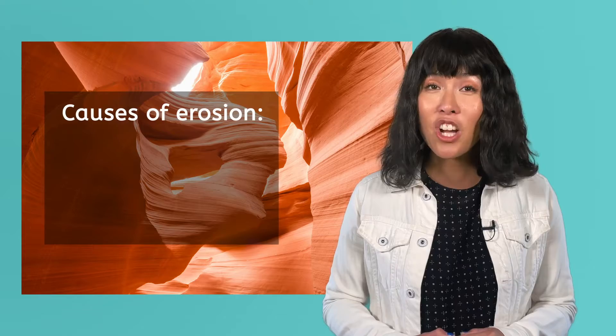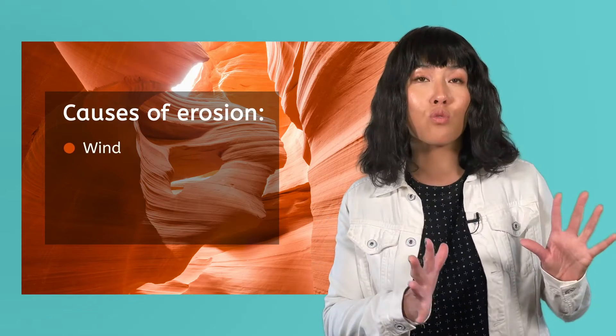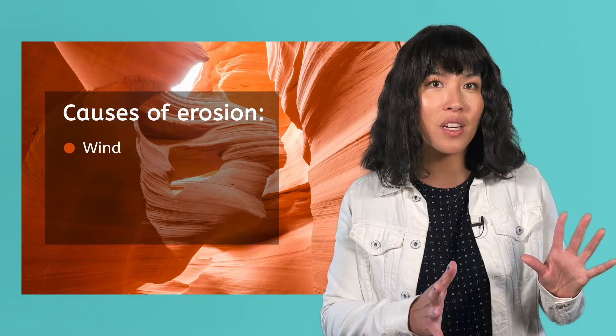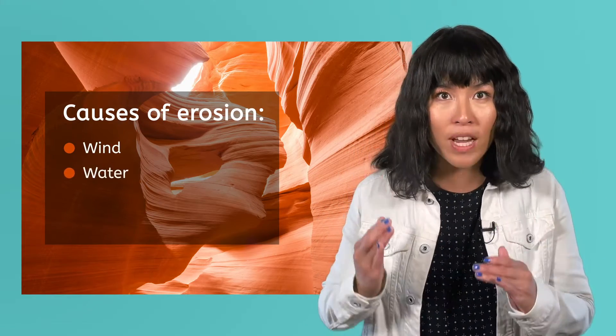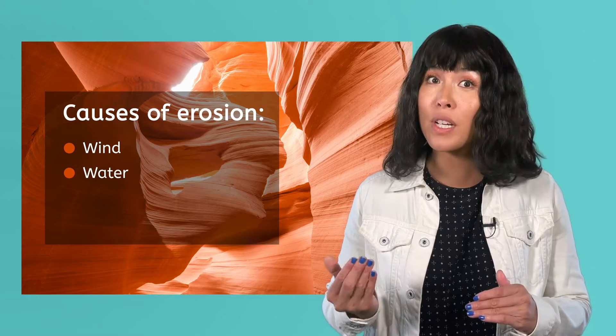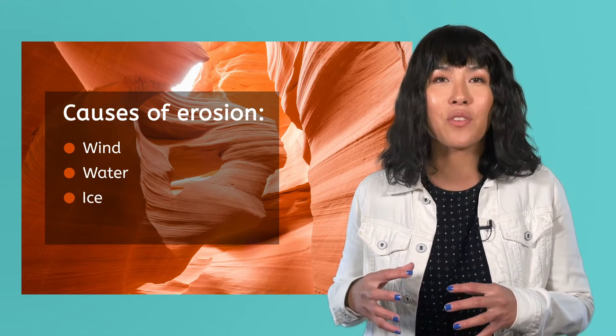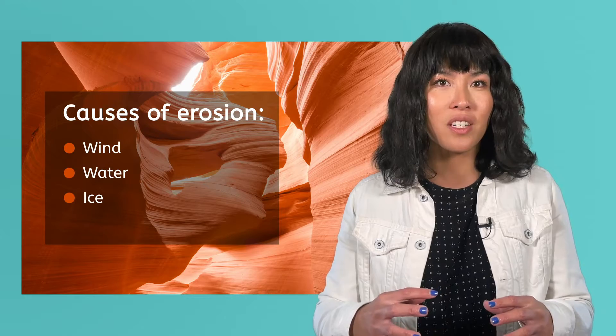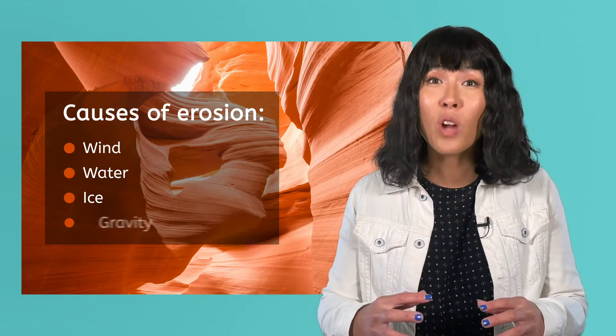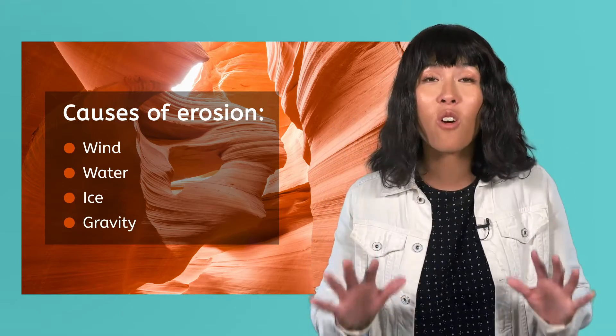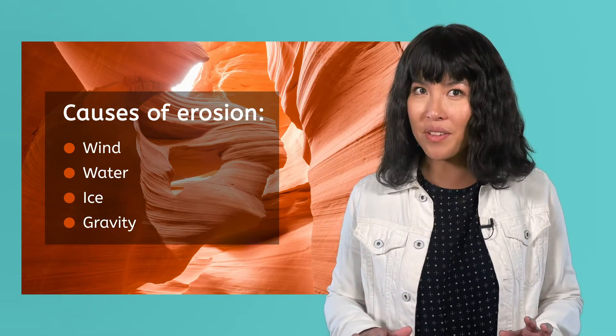The main causes are when wind blows rocks around, when moving water from rainfall or streams carries rocks away, when ice carries rocks along with a glacier, or when gravity simply makes rocks fall to somewhere else. You might be thinking: OK, so a couple of pebbles move around — what's the big deal about erosion?